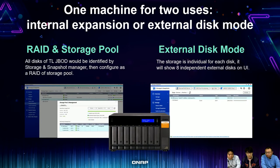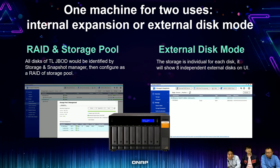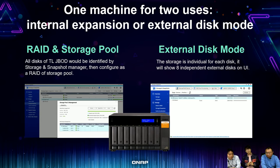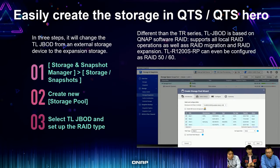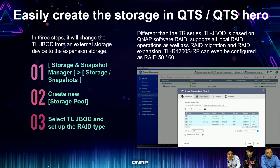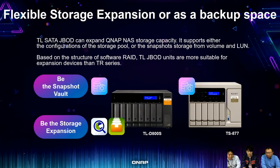This TL J-Bot is one machine for two uses. First, when connected to our NAS in external disk mode, the storage is individual for each disk — for D800S you'll see eight independent disks in the UI. You can also configure it as a RAID storage pool — it's easy in just three steps: launch Storage and Snapshot Manager, click create to create a storage pool, then select the TL J-Bot and set up the RAID type.